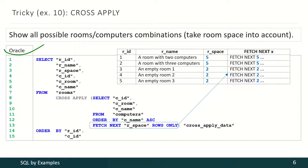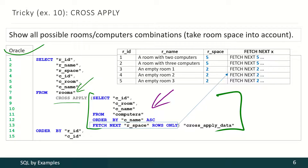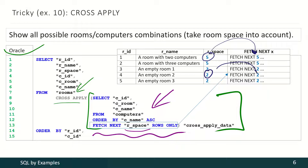The solution for Oracle is exactly the same. We have to select information about rooms and cross-apply it with such a query result. This query for each room selects only as many computers as the space of that room is. That data goes here, that data goes here, and so on. And that's how we achieve the final result.